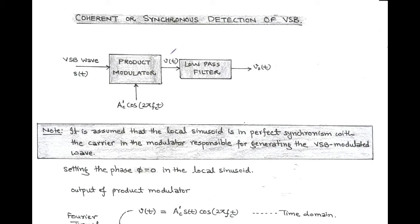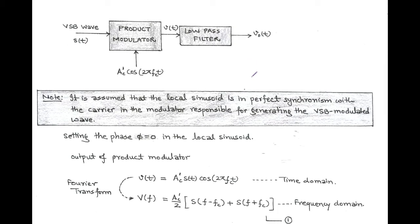In synchronous detection, the product modulator is followed by the low pass filter. The output of the low pass filter is V₀(T), which corresponds to the scaled message signal or modulating signal. Now, we are going to derive mathematically the output of the synchronous detector that corresponds to the scaled message signal.